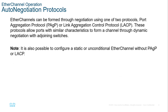What protocol are we going to use when setting up our aggregation? We have two types of negotiation protocols: Port Aggregation Protocol (PAGP) or Link Aggregation Control Protocol (LACP). These protocols allow ports with similar characteristics to form that channel. It is possible to configure a static or unconditional EtherChannel without either one — you can hard code them as well. Some non-Cisco products may use one over the other; for example, Netgear uses LACP by default.